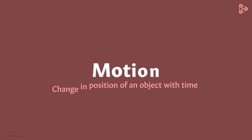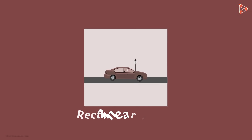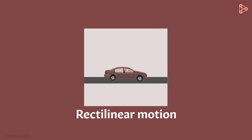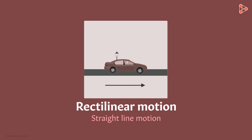In the previous video, we studied what motion is. We also saw one type of motion called rectilinear motion — it's nothing but straight line motion. In this type of motion, the path of a moving object is a straight line.